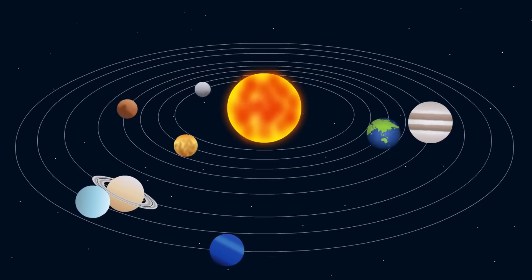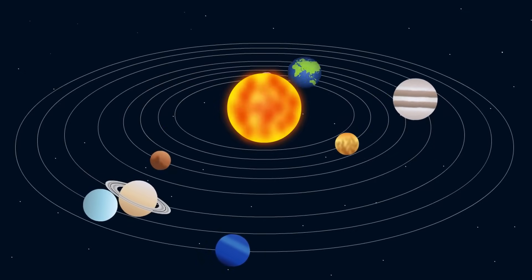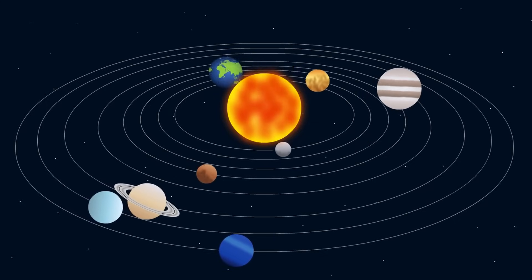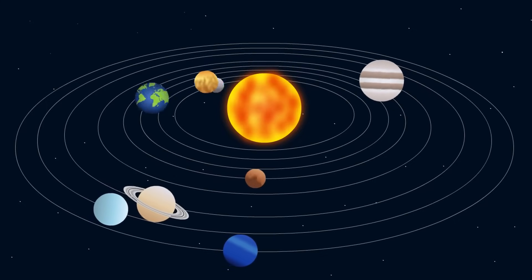Jupiter, 778 million kilometers away. Average atmospheric temperature at sea level equivalent pressure, -108 degrees Celsius, 165 Kelvin.